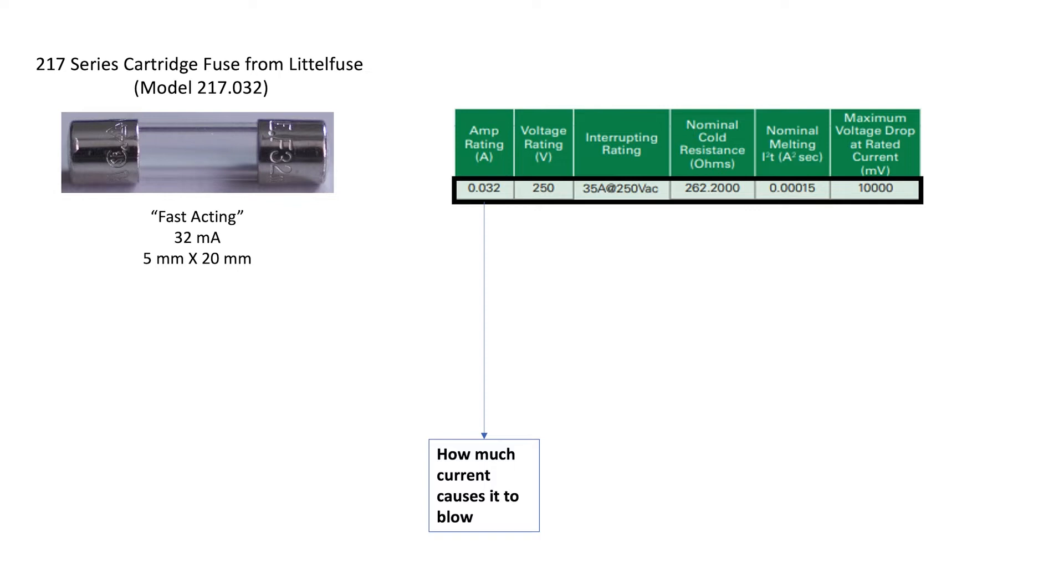Can you use a fuse that's rated 1,000 volts, 32 milliamp, in a circuit where the voltage would only be 230 volts? Yes, you can. As long as the voltage rating is higher than any voltage that you expect would appear across that fuse, then you're safe.